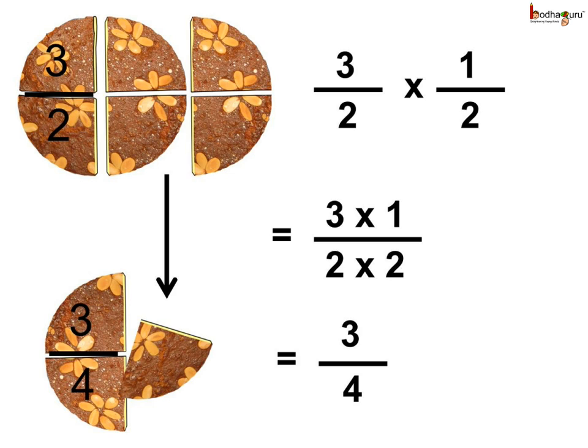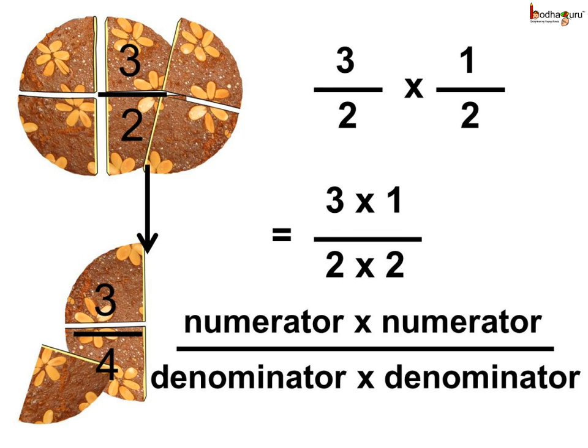This is 3 by 2 multiplied by 1 by 2. Here we multiply numerator by the numerator, so it is 3 multiplied by 1, which is equal to 3. And we multiply the denominator by the denominator of the two rational numbers to get the product.